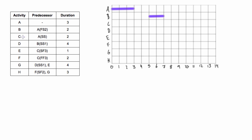Activity C depends on A and it's a start-start relationship, so activity C can start when A starts. There's no lag, so we will start right at zero again, and this one's also two days, so we will just go to day two.